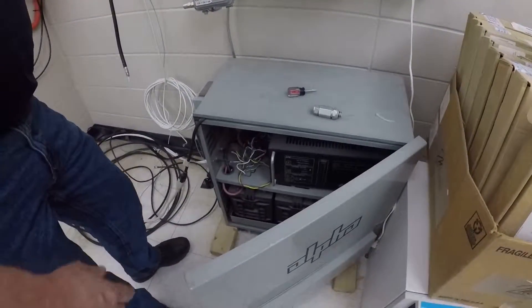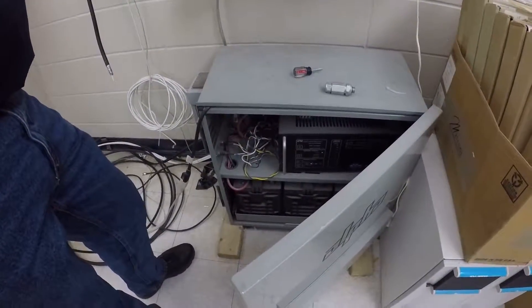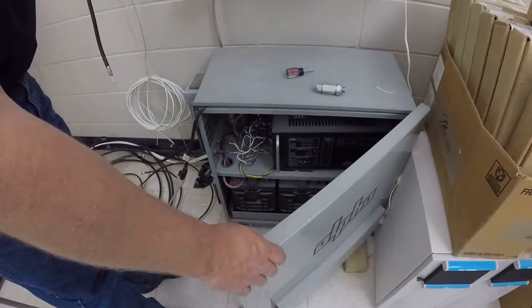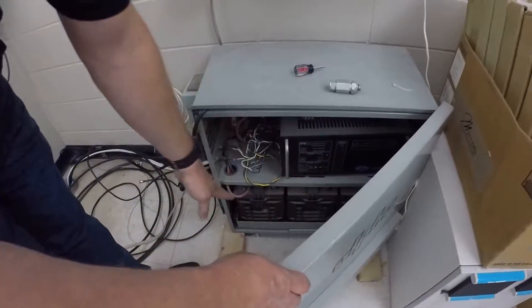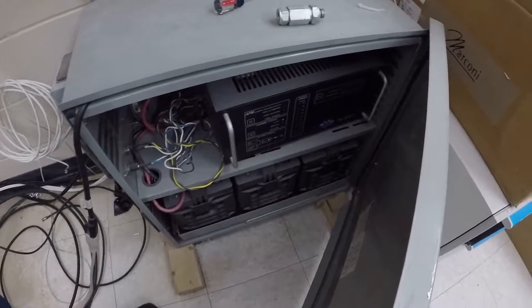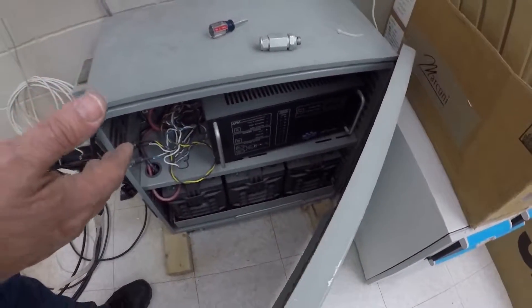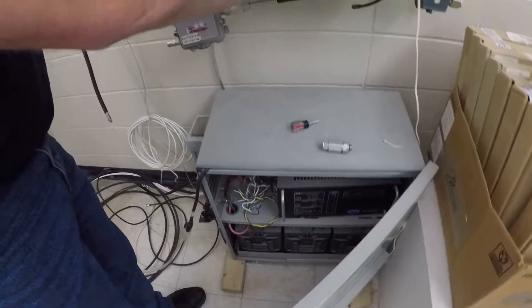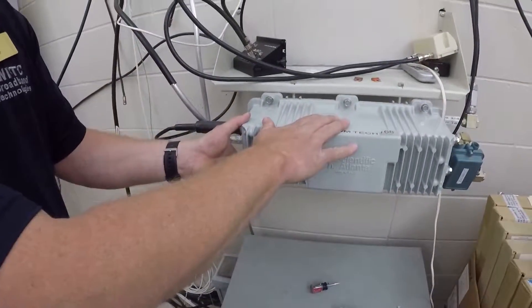So wherever there's an electrical or a fiber optic node, you're going to have some type of power supply that has battery backups. So if the power goes down, the battery backups kick into place that provides power to the node.